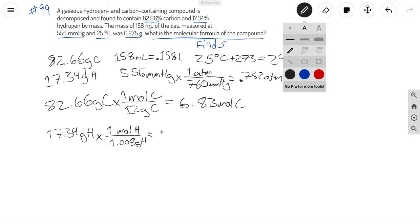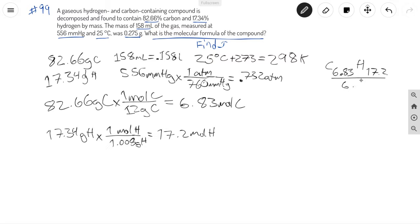All right, and from here, in order to find the empirical formula, we have our moles. So to find the empirical formula you write down your elements with the subscripts like so, and then you divide by the smallest subscript, which is CH2.5.